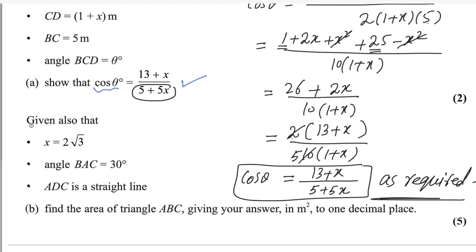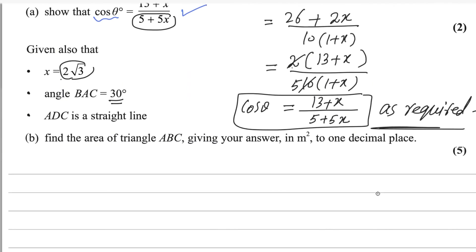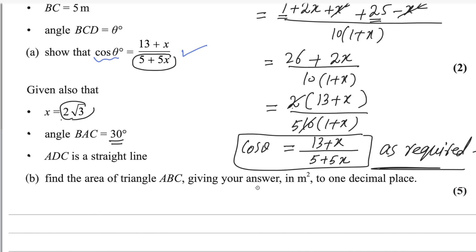For the next part, it is also given that x equals 2√3, angle BAC is 30 degrees, and ADC is a straight line in the figure — it is not an angle, it is a straight line. Find the area of triangle ADC, giving your answer in square meters.